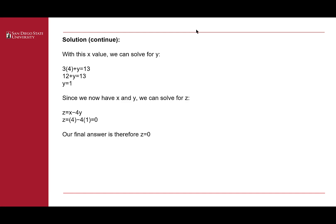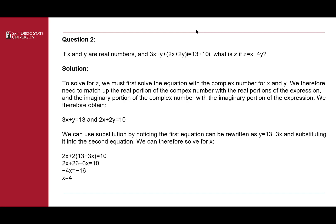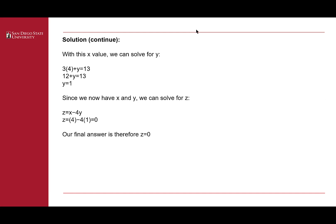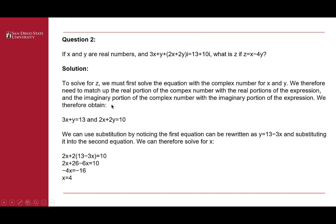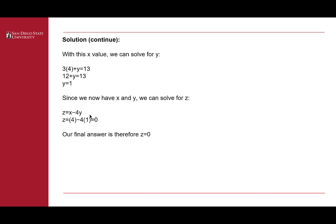With x = 4, we solve for y: 3(4) + y = 13, so 12 + y = 13, giving y = 1. Since we now have x = 4 and y = 1, we can solve for z. Z is given as x - 4y, so we get 4 - 4(1) = 0. The final answer is z equals 0.